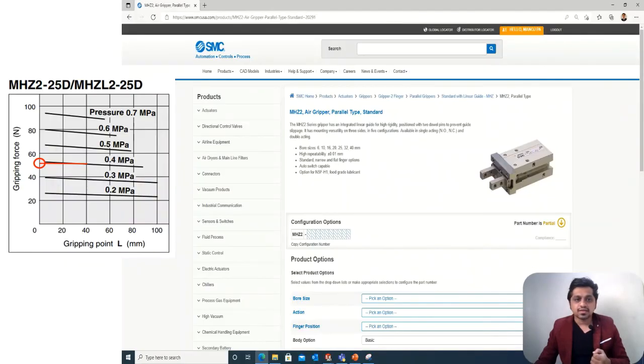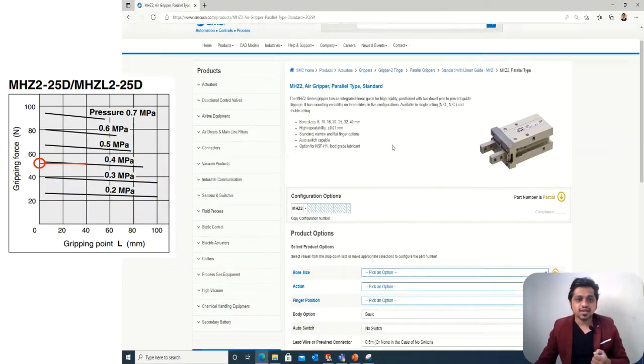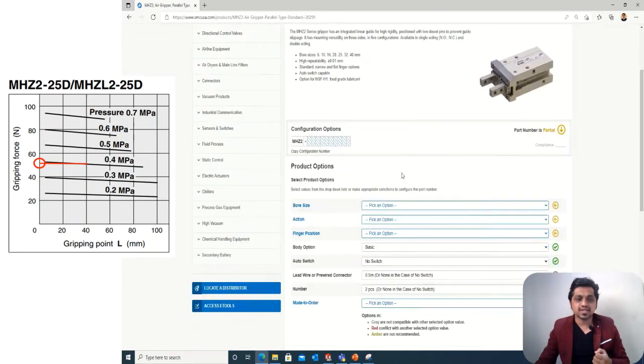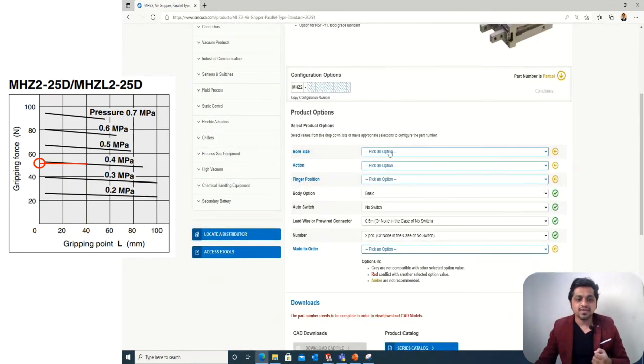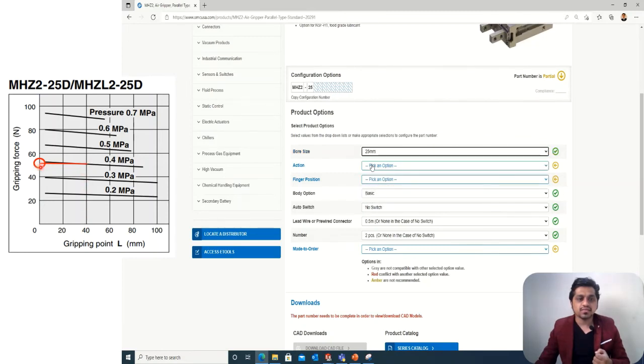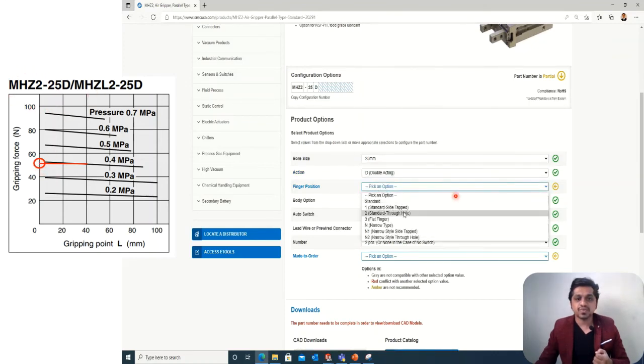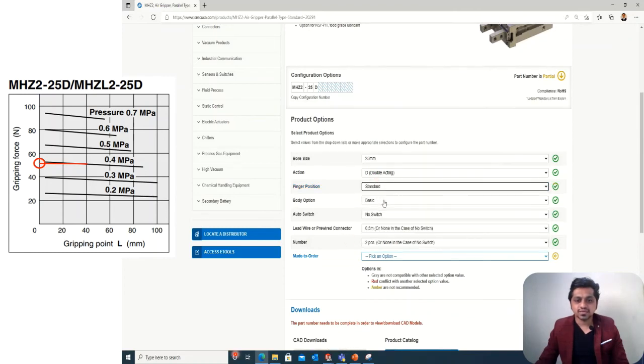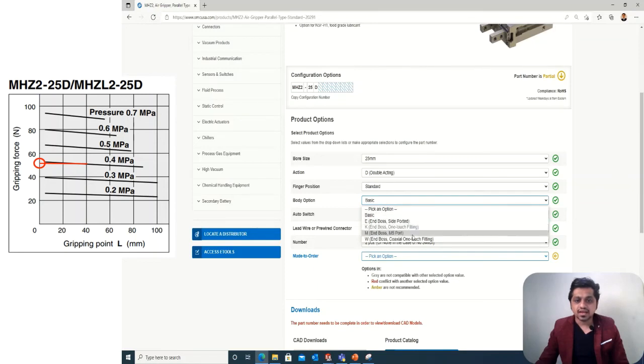Here you can see with the help of our inputs we've selected this part. We have a gripping length of 40 and 0.4 bar, which is giving a force of around 50 newtons. That's how we've selected this part. We have all the parameters here and we will select these parameters.